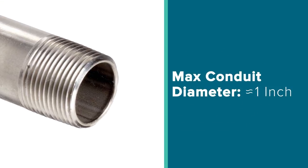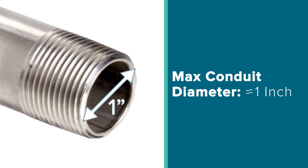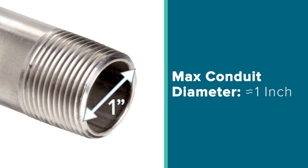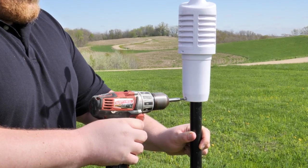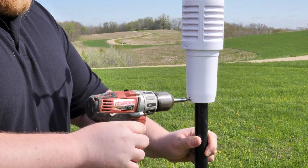If you plan to use your own mounting pole, the maximum outside diameter of your conduit should be no greater than 1 inch. Attach it to your mounting pole with screws through the holes on the bottom of the sensor.